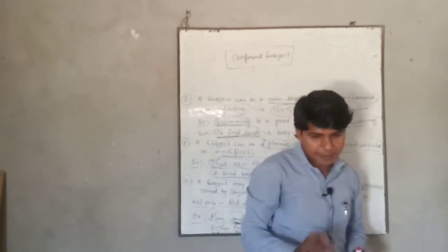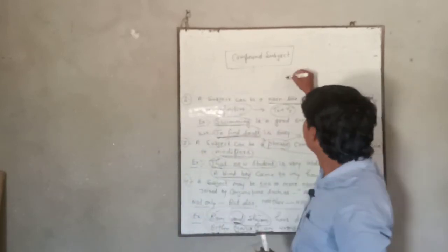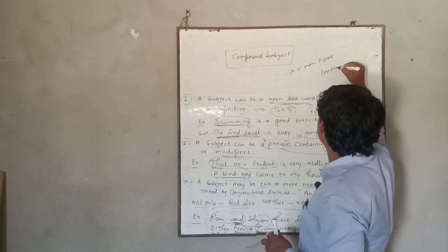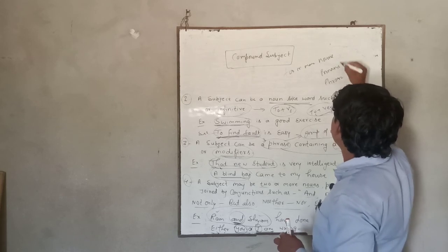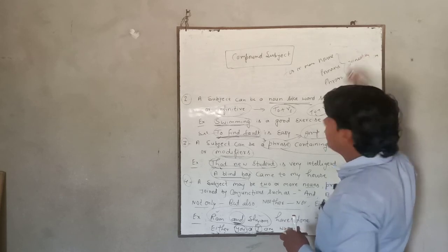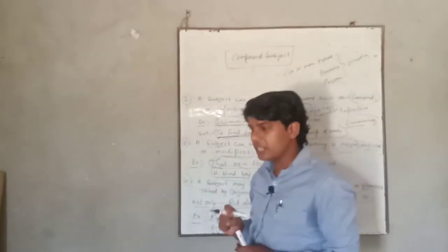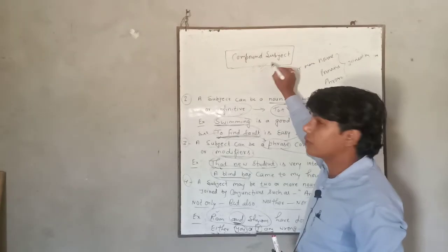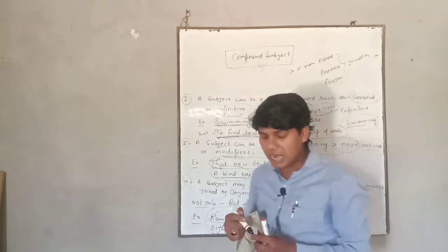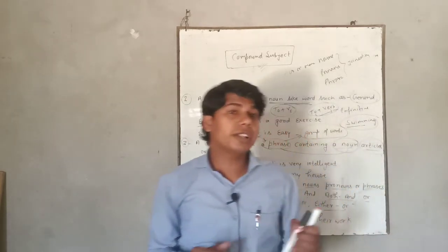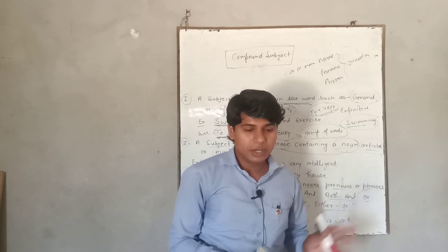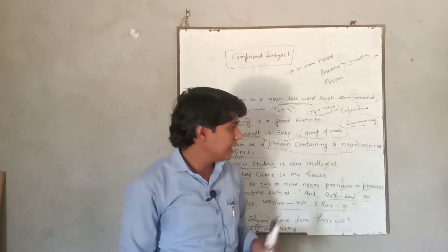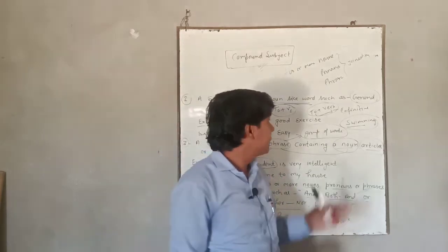When two or more nouns, pronouns, or phrases are joined by some specific conjunction, that type of subject is known as a compound subject. So students, I hope you have understood all the points mentioned here. If you have any doubt about the topics, you can comment or leave a message.